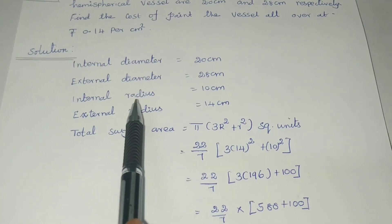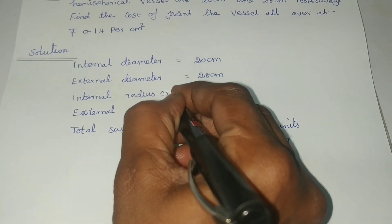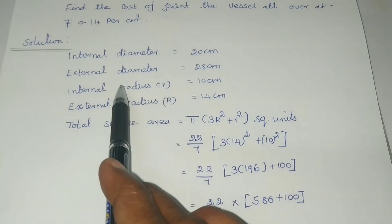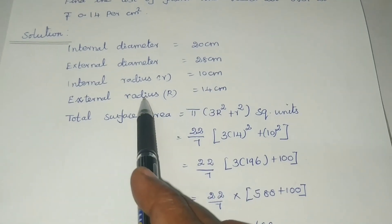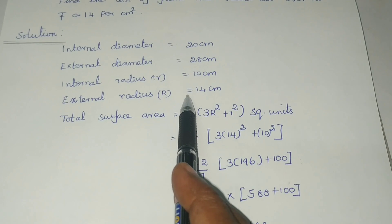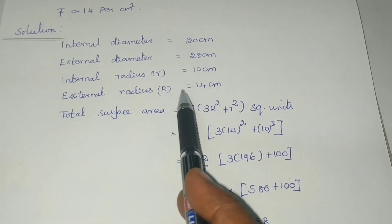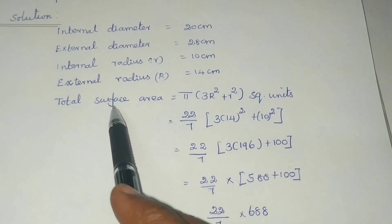The internal radius (small r) is 10 cm, and the external radius (capital R) is 14 cm. The diameter divided by 2 gives the radius.